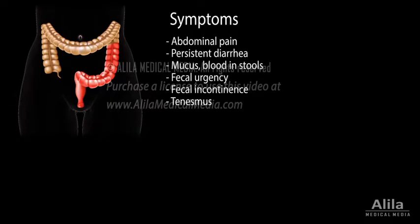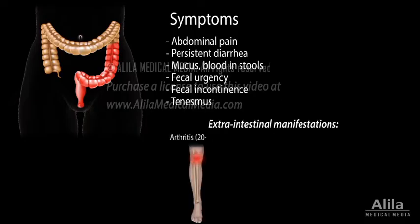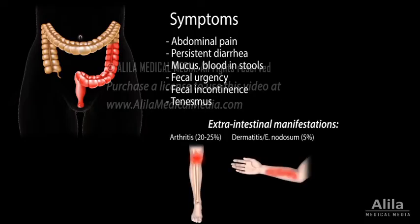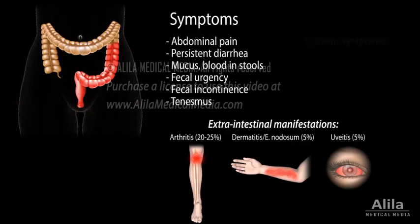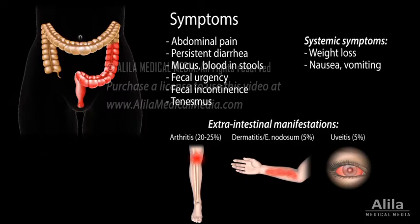The disease also often manifests outside the intestine as a result of inflammation of joints, skin, and eyes. Severe cases can present with systemic symptoms such as weight loss, nausea, vomiting, fatigue, and fever.